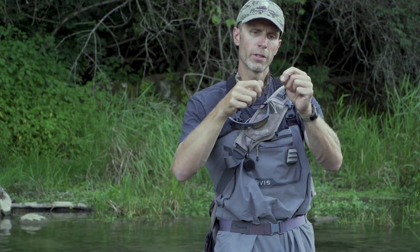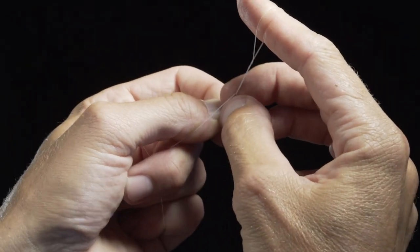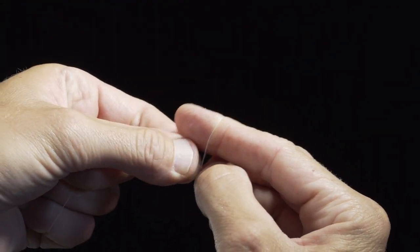Going to create a loop. Use your index finger to form a five-turn clinch knot. Take the tag end through like you normally would for a clinch.